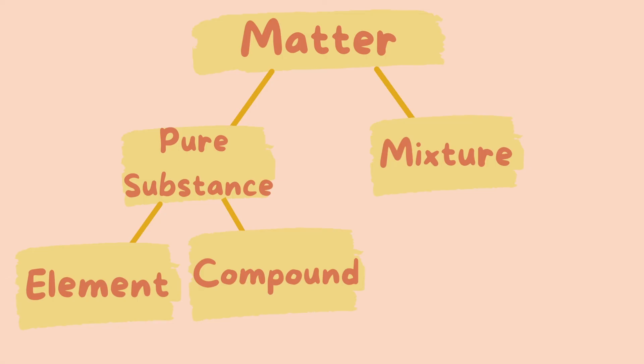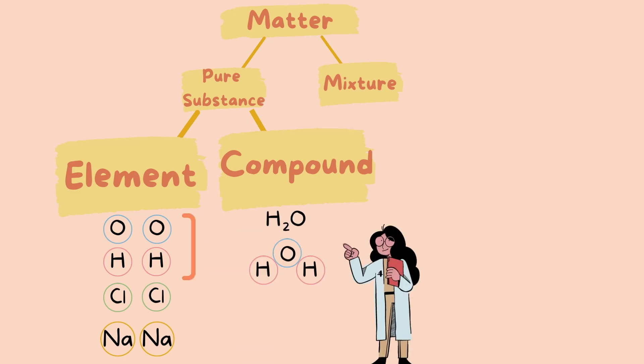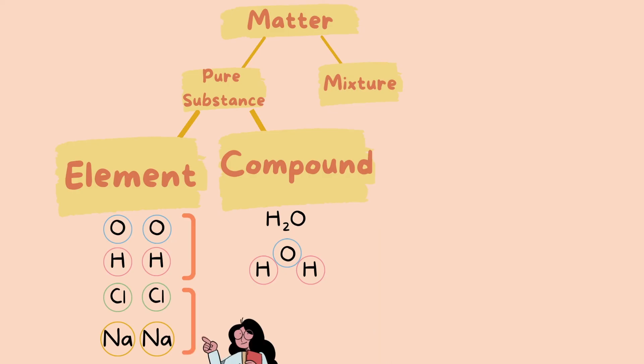Let's look at some examples of elements and turn them into some compounds. So here we have oxygen, hydrogen, sodium, and chlorine atoms. These are all in their purest, most simplest form, their elemental form. Now we can combine these elements to make compounds. So if we combine hydrogen and oxygen, we can make H2O. If we combine sodium and chlorine, we can make sodium chloride.